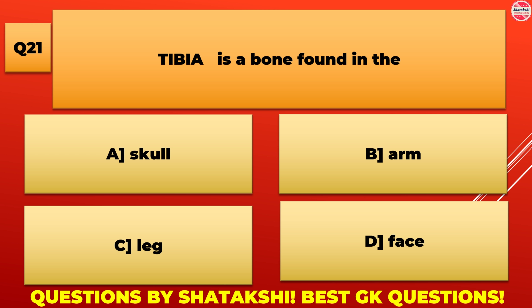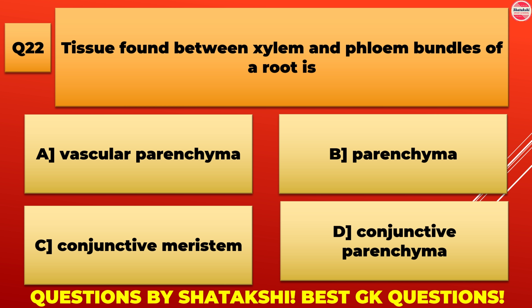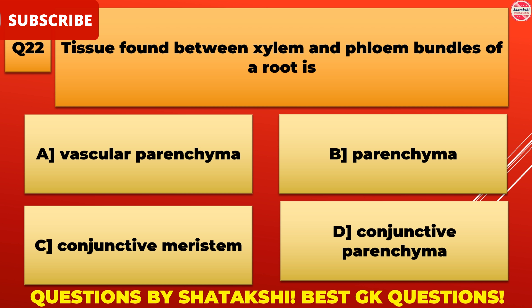Tissue found between xylem and phloem bundles of a root is: A. Vascular parenchyma, B. Parenchyma, C. Conjunctive meristem, D. Conjunctive parenchyma. D. Conjunctive parenchyma is the correct answer.